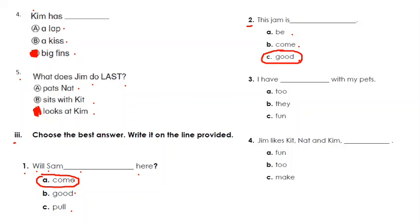Number three: I have blank with my pets. I have to with my pets, they, or I have fun with my pets? Of course the word fun makes sense, and this is the right answer. Number four: Jim likes blank Kit, Nat, and Kim. Fun, to, make sense? And this is the right answer. The most logical answer is to. He likes them all.